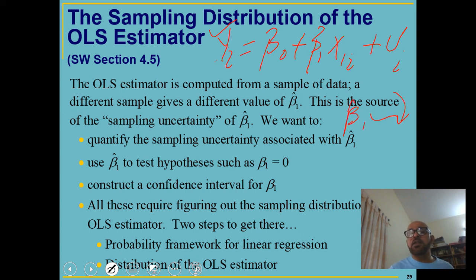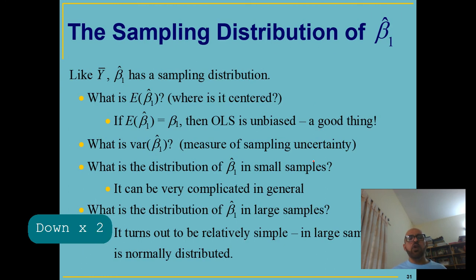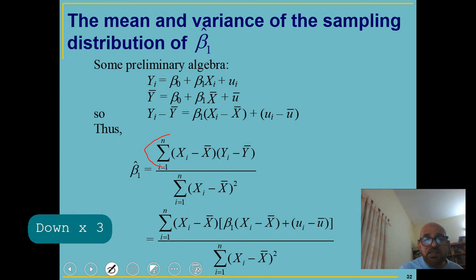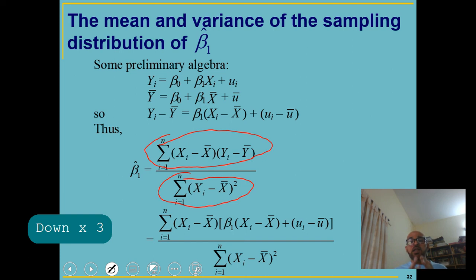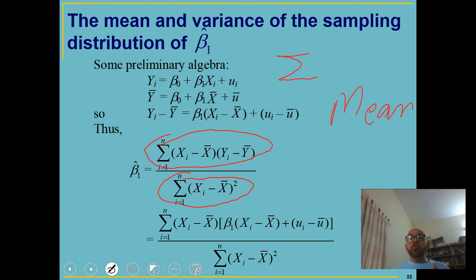Beta 1-hat is also normally distributed. Even if u_i is not normally distributed we don't have a serious issue, because beta 1-hat involves a sum, and by the central limit theorem the distribution of a sum or means is normally distributed even if the original values are not. So for large samples we don't have any issue.